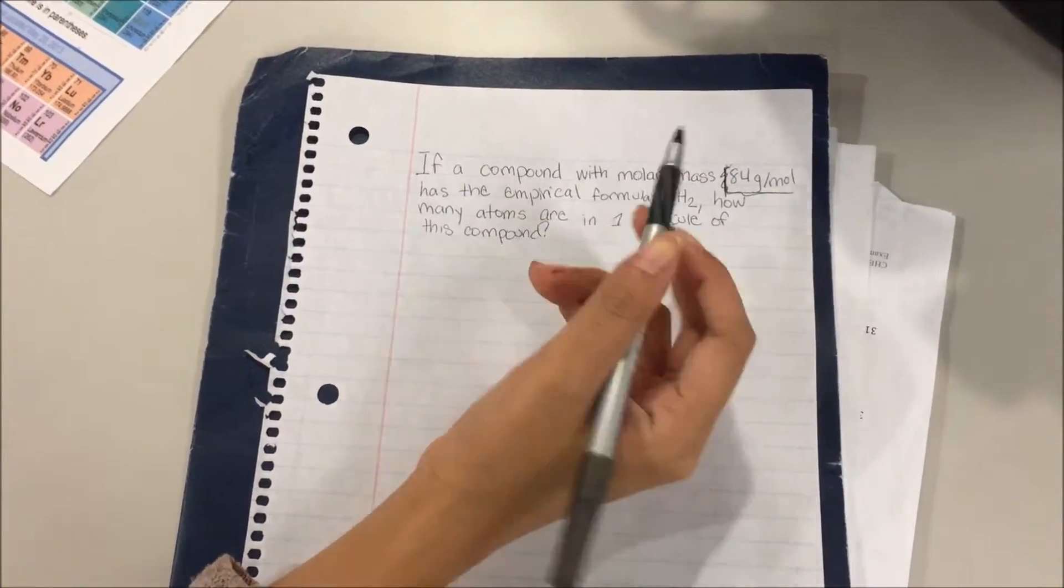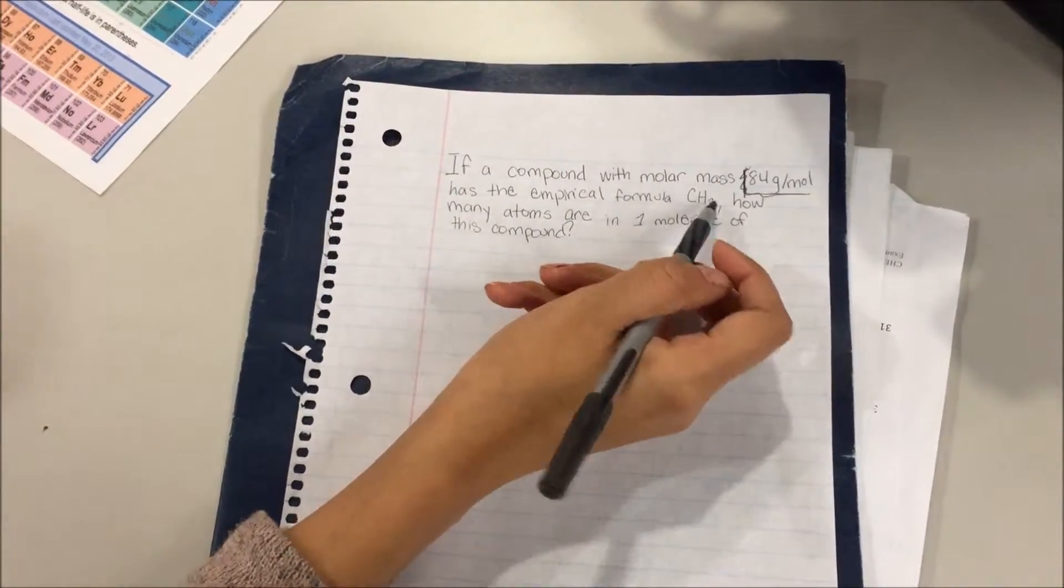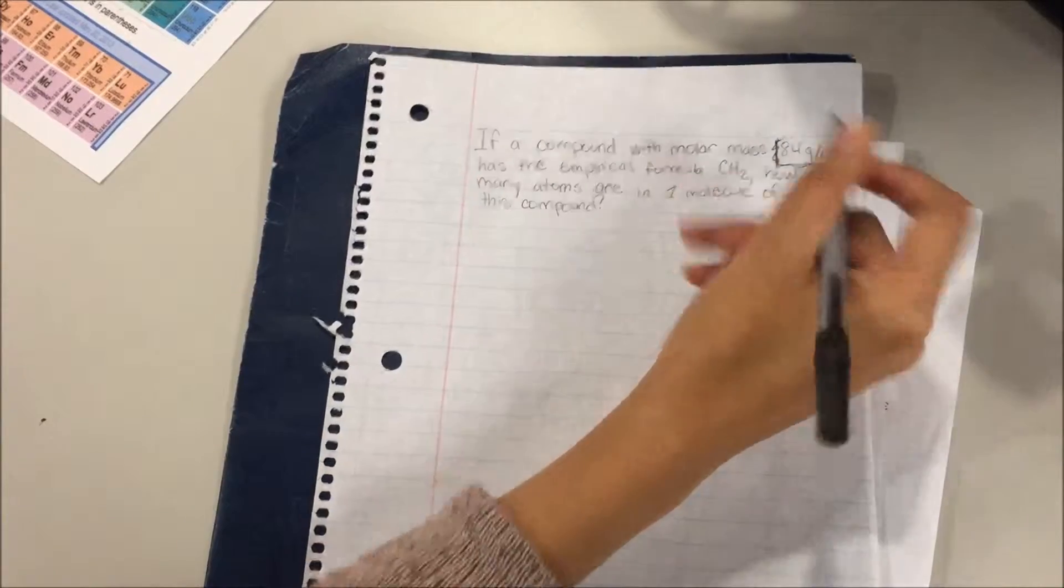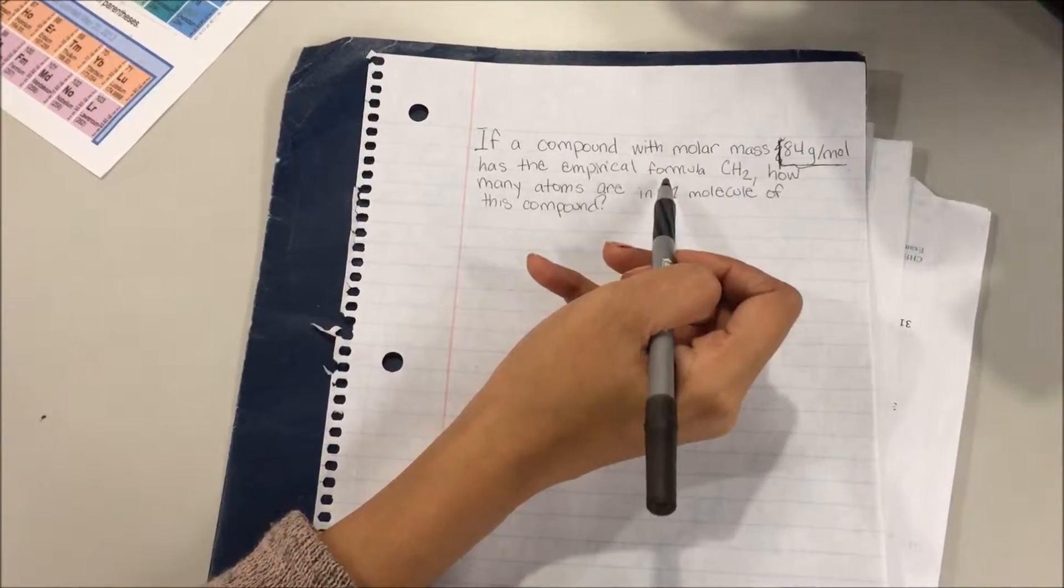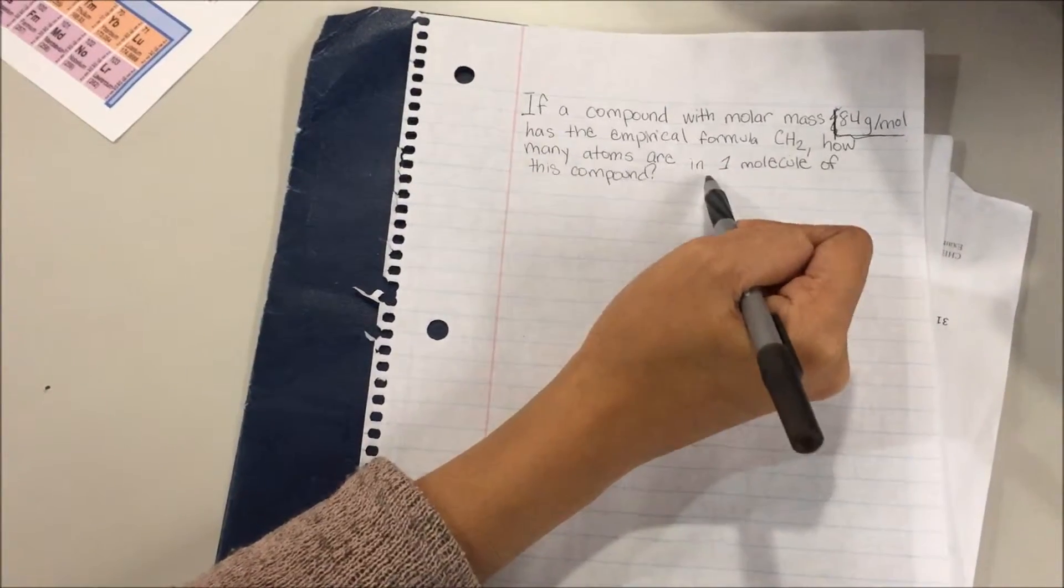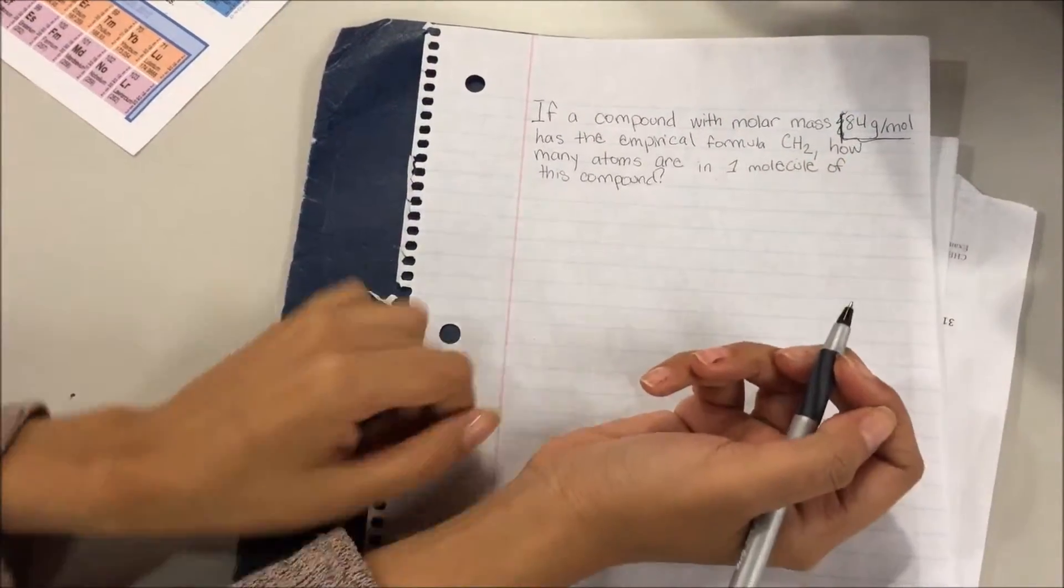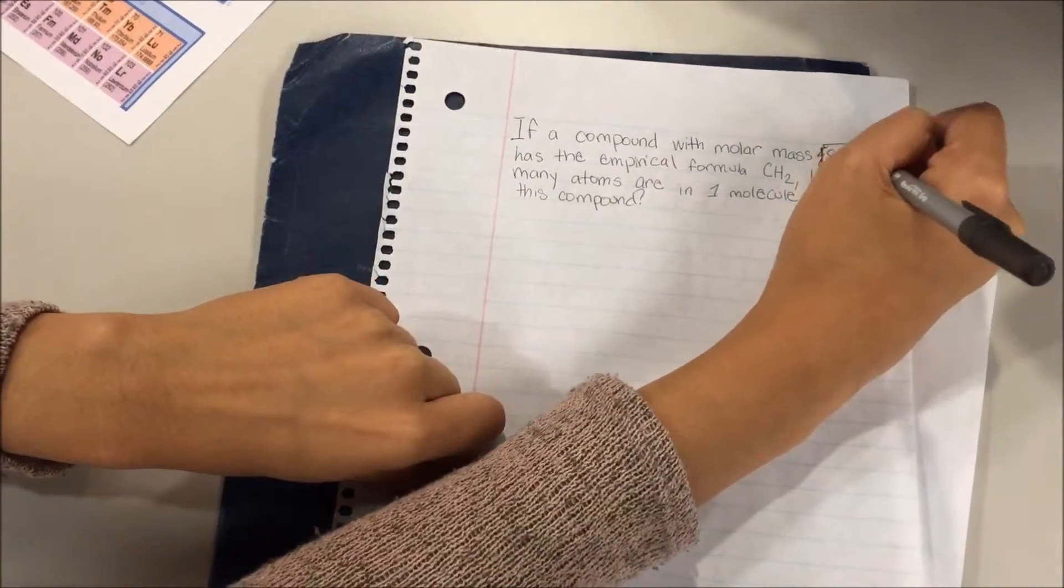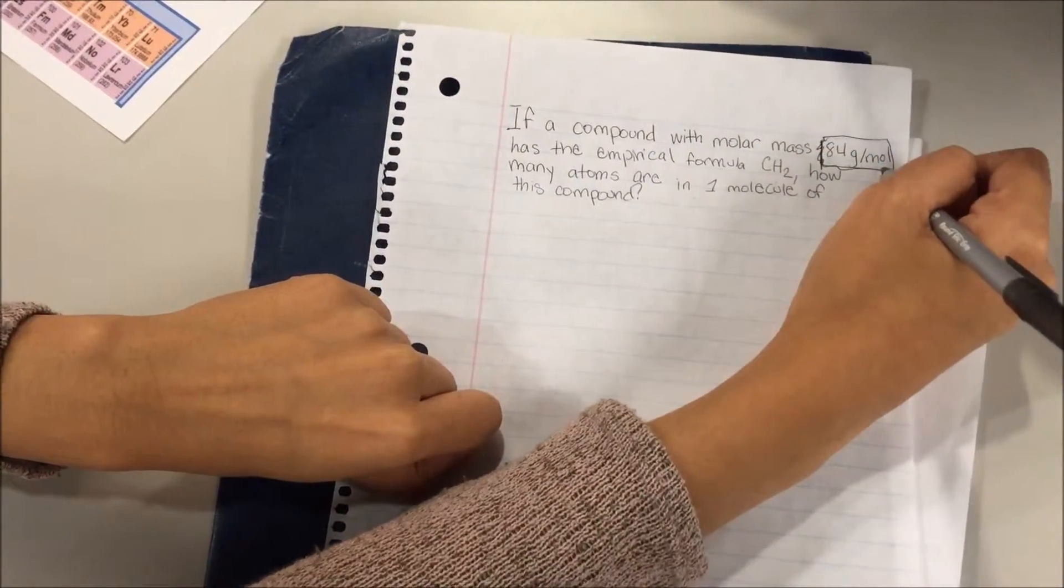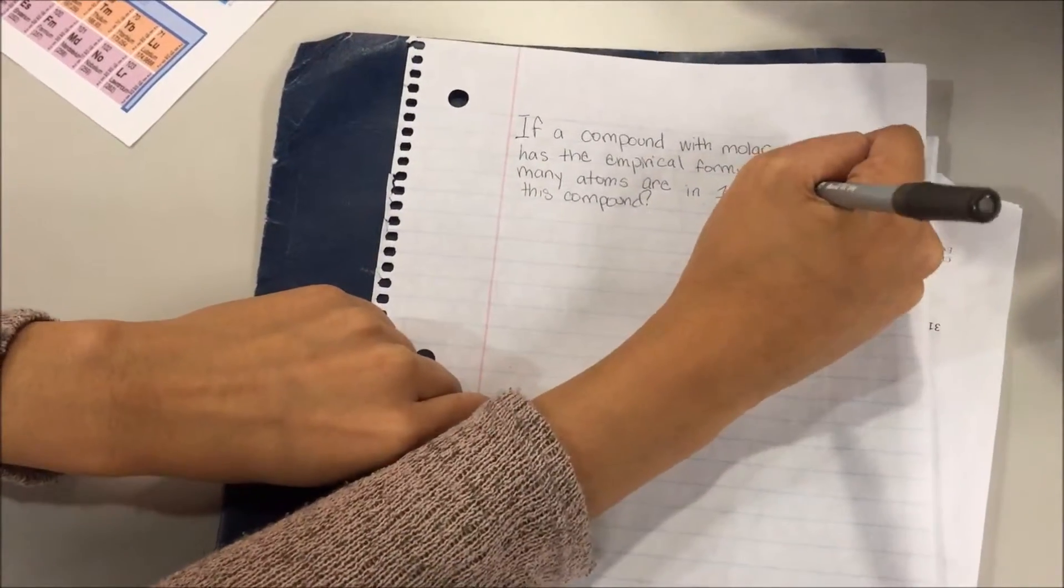Okay guys, let's do this problem. If a compound with molar mass 84 grams per mole has the empirical formula CH2, how many atoms are in one molecule of this compound? What do we know? We know that there's 84 grams per mole in this compound and we know the empirical formula.